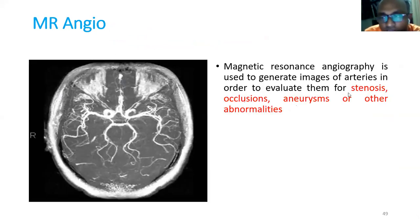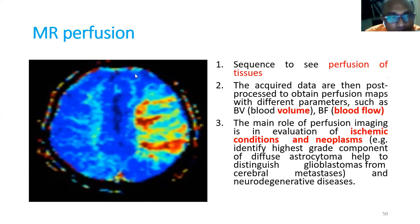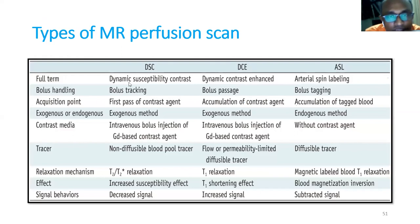MR angiography can differentiate stenosis, occlusion, and aneurysm. MR perfusion shows the vascularity around the tumor — this is blood volume and blood flow. On perfusion maps, blue background is normal and reddish/yellowish background indicates hyperperfusion. You can measure blood volume at a specific point. Types of MR perfusion include dynamic susceptibility contrast (DSC), dynamic contrast resonance (DCE), and arterial spin labeling. These subtypes are beyond current scope.